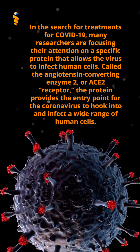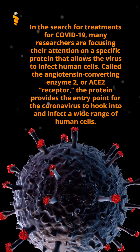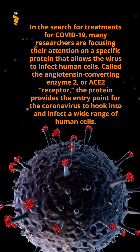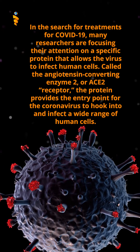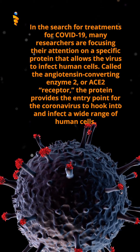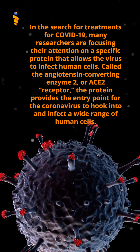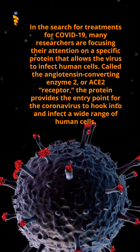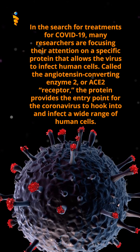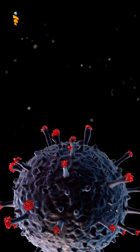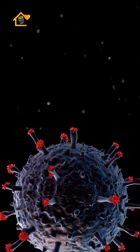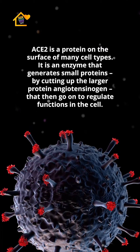In the search for treatments for COVID-19, many researchers are focusing their attention on a specific protein that allows the virus to infect human cells, called the angiotensin converting enzyme 2, or ACE2 receptor. The protein provides the entry point for the coronavirus to hook into and infect a wide range of human cells. What is the ACE2 receptor?